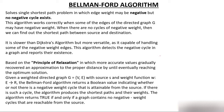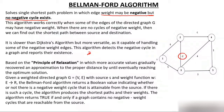So what is Bellman-Ford? This is the entire theory. It's very important and can be asked in interviews: if we can find single source shortest path using Dijkstra, then what is the use of Bellman-Ford? Bellman-Ford solves the single source shortest path problem in which edge weights can be negative — whereas in Dijkstra, every edge must have positive weight. In Bellman-Ford we can handle graphs with negative weight edges.